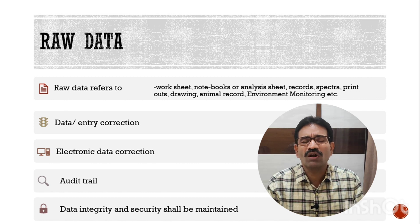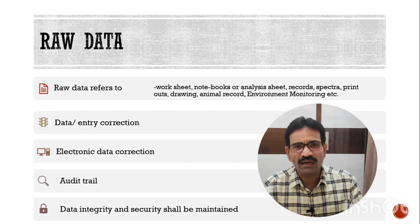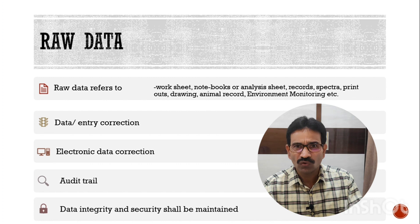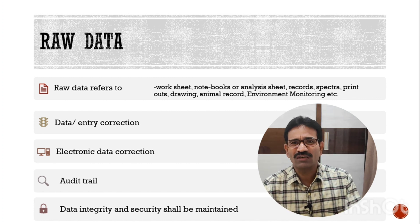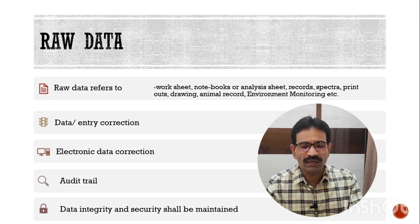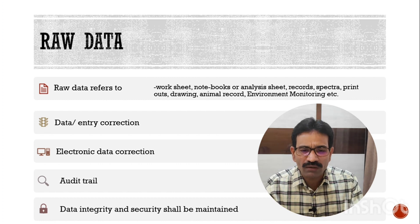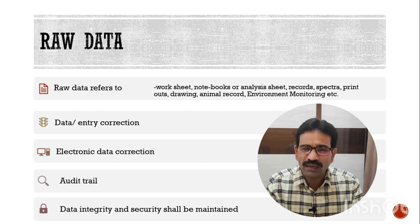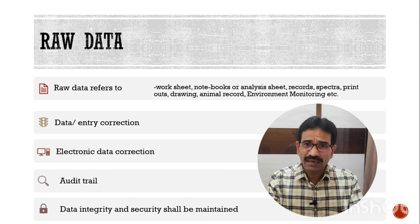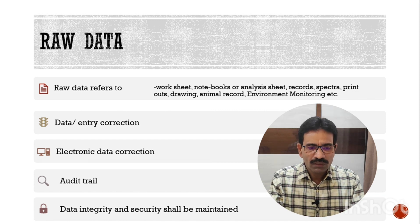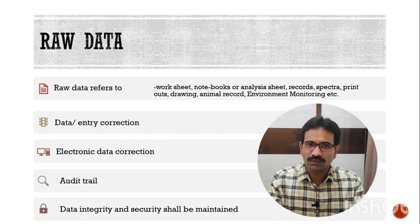As per Schedule L1, there are specific requirements for raw data maintenance. Raw data refers to your worksheets, test reports, analytical work records, notebooks, log books, spectra, chromatograms, printouts from balance or any instrument, environmental monitoring records, and animal records if you have an animal house. Corrections in entries are also considered raw data. Electronic data corrections and audit trails are also considered under raw data. Data integrity shall be maintained, and you have to have security for your software-related data.